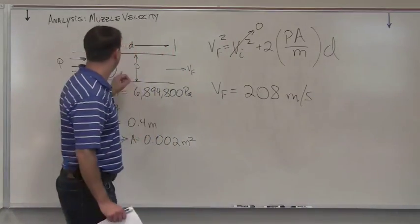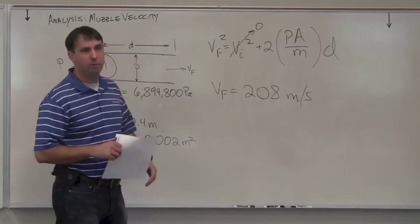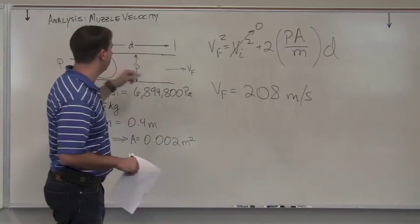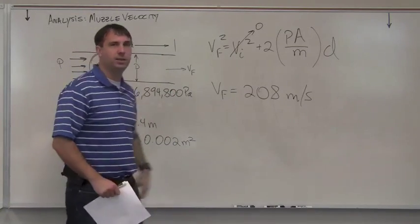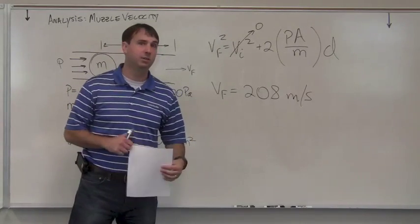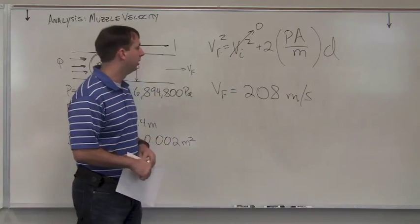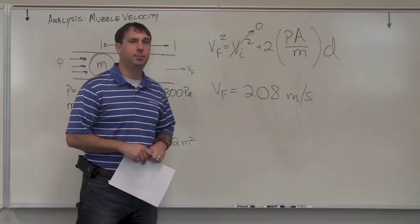So for this example, I got 208 meters per second leaving the barrel. That's pretty quick. You might want to go back and check the acceleration on that. If you were to go from 0 to 200 meters per second in 0.4 meter distance, how much acceleration does your probe feel? Can your probe tolerate that kind of acceleration? That's something you should know as well. Anyway, thanks so much. Talk to you later.